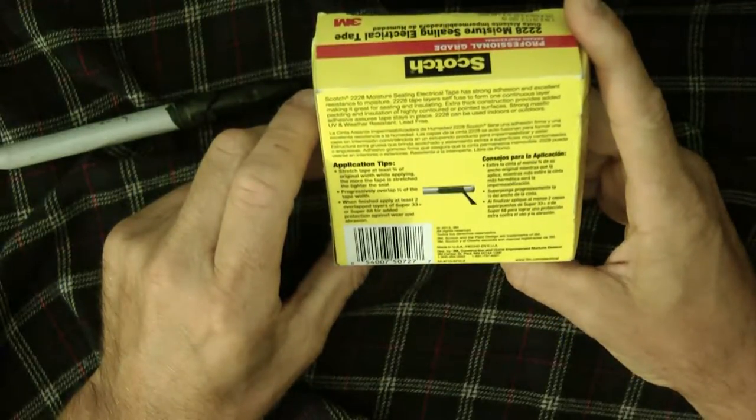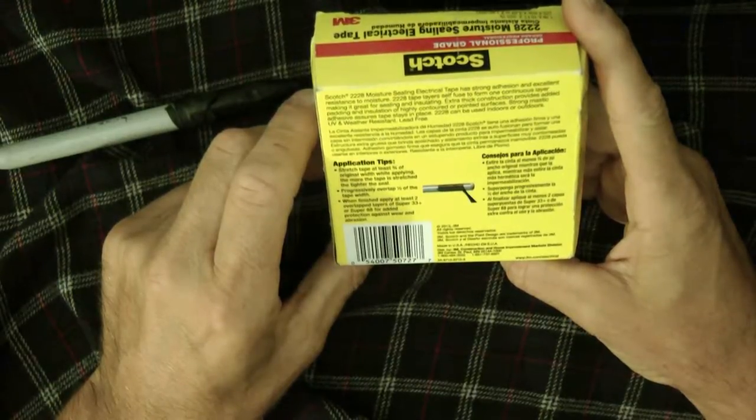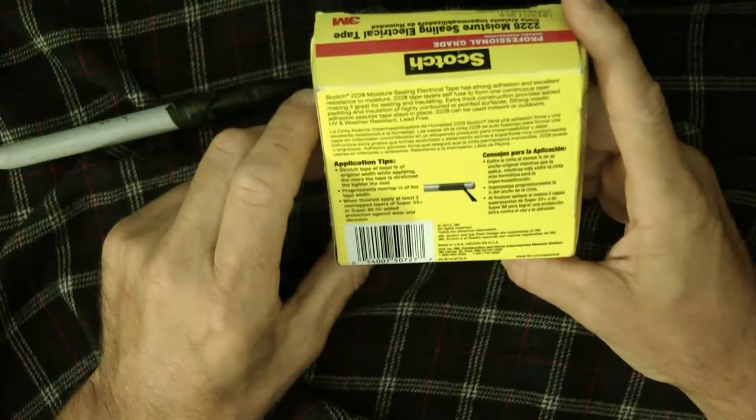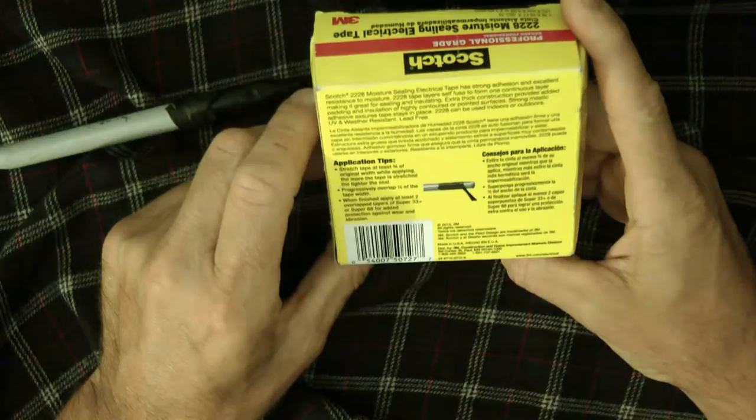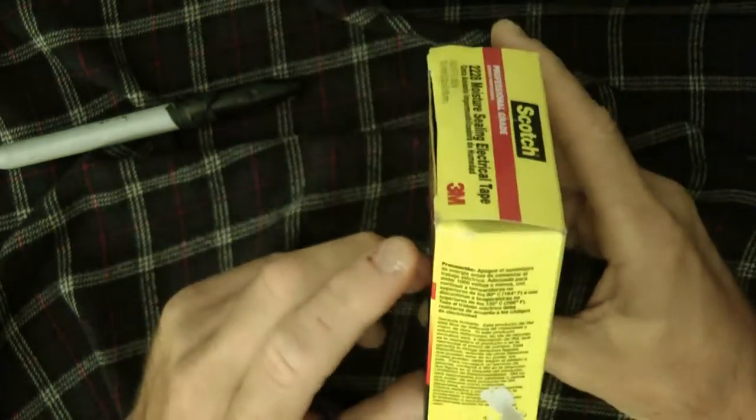Strong adhesion and excellent resistance to moisture. Tape layers self-fuse to form a continuous layer, making it great for sealing and insulating. Extra-thick construction aids padding insulation of highly contoured and pointed surfaces. This is really nice stuff I use a lot.